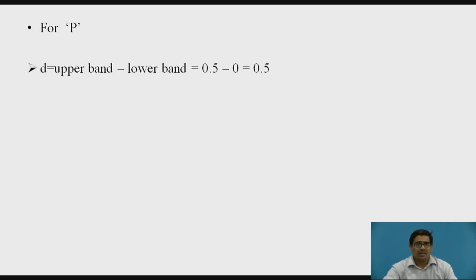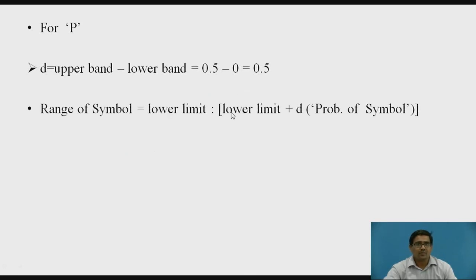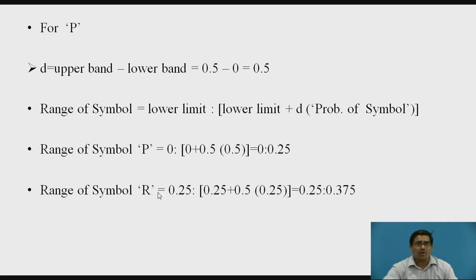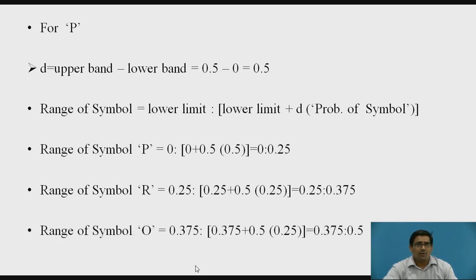We want to calculate D, the difference, which is upper band minus lower band. For P, D = 0.5 minus 0 = 0.5. The formula for range of symbol is: lower limit to lower limit plus D multiplied by probability of symbol. Putting these values into the equation, the range of symbol P is 0 to 0.25. The range of symbol R in the P subdivision is 0.25 to 0.375. The range of symbol O in the P subdivision is 0.375 to 0.5.